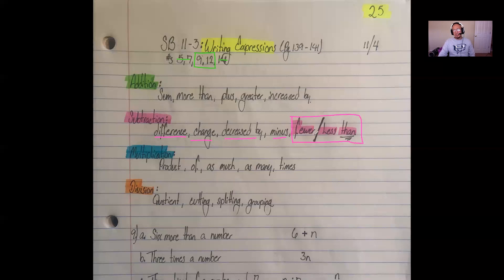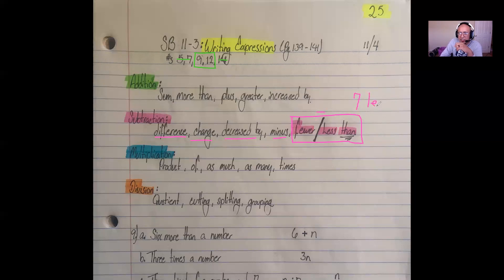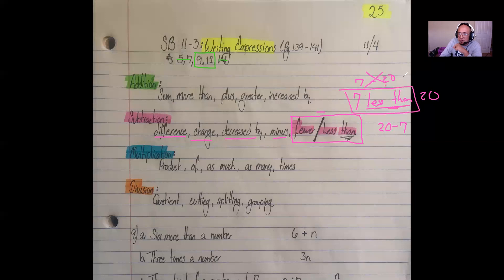However, I want you to pay special attention to fewer than and less than. Generally speaking, these do mean subtraction, but they actually mean subtraction after whatever follows. For example, seven less than 20 means we take seven away from 20 — it becomes 20 minus 7. If you read it straight across as seven minus 20, that would be incorrect. Anytime you have less than or fewer than, the subtraction happens after whatever follows.